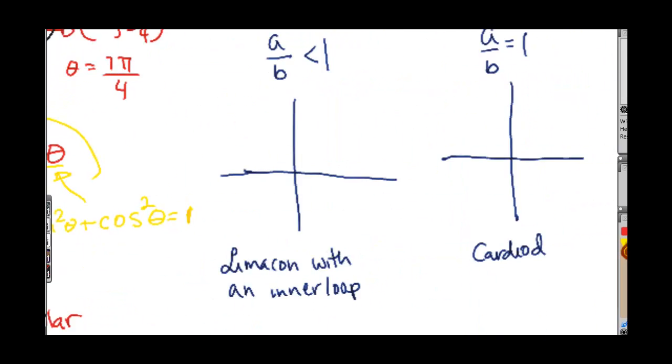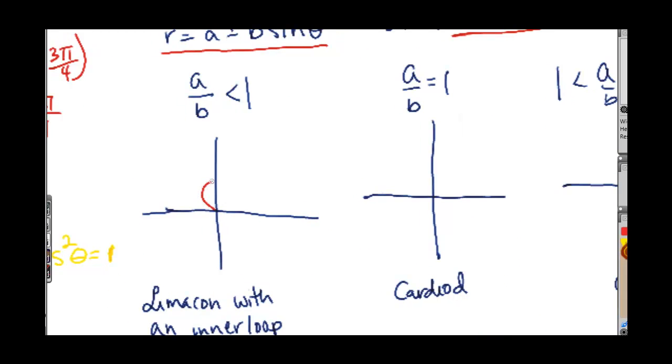But the first one, a over b less than one, is a limaçon with an inner loop. Something like this. And we will find that inner loop by using the tangents at the pole. And they'll also tell you how thick these humps are right there.